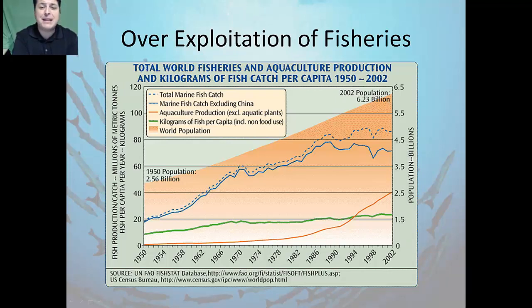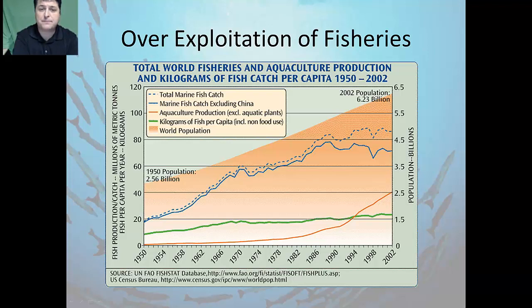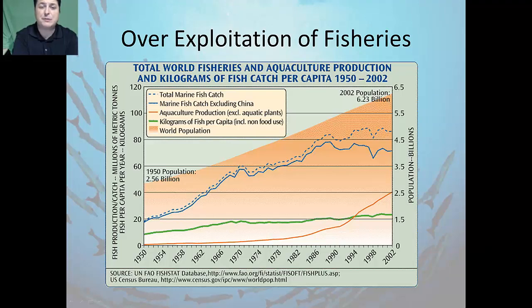In fact, many populations of formerly abundant high trophic level species of fish like cod have actually collapsed. Fishermen are now being reduced to catching fish that used to be considered bait fish or were food for larger fish.